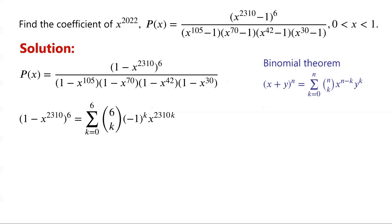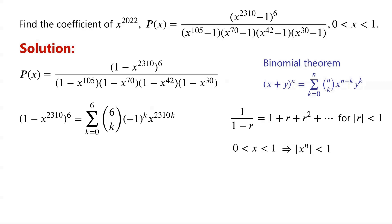For the denominator, we know that the infinite series 1 plus R plus R squared plus so on converges to 1 over 1 minus R when the absolute value of R is less than 1. We are given that X is greater than 0 and less than 1, so the absolute value of X to the power of N is less than 1. Applying this, 1 over 1 minus X to the power of N equals 1 plus X to the power of N plus X to the power of 2N plus so on, which can be written as the sum from I equals 0 to infinity of X to the power of I·N.